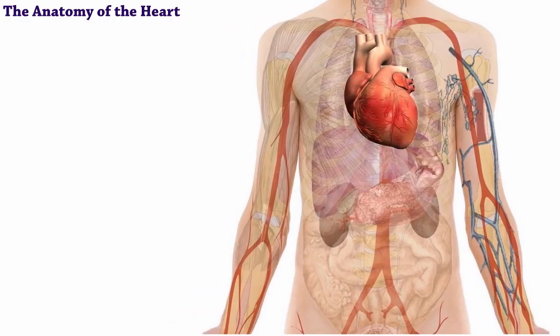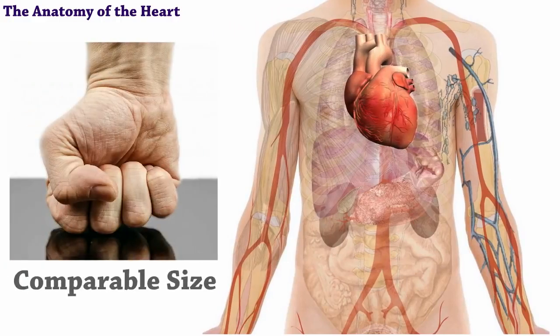A normal, healthy adult heart is about the same size as a clenched fist.